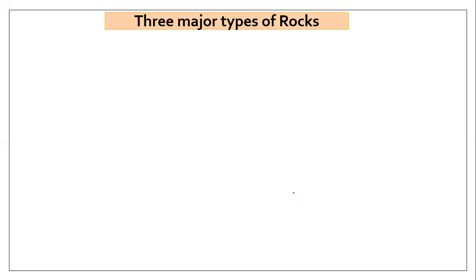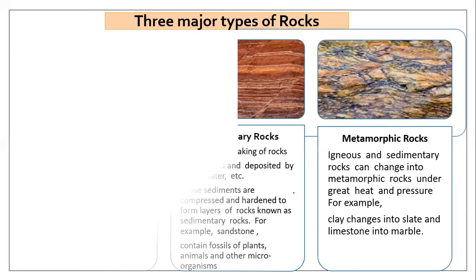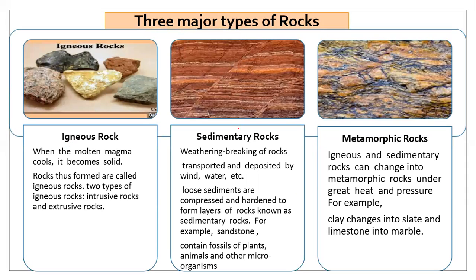Now let's talk about the types of rocks. There are basically three types: igneous rock, sedimentary rock, and metamorphic rock. Igneous rock is the first and is called the primary rock. Sedimentary rock is called the secondary rock. Metamorphic rock is called the tertiary rock. When molten magma cools, it becomes solid — rocks formed this way are called igneous rocks.